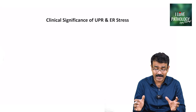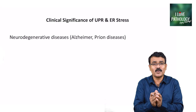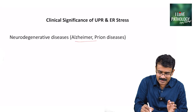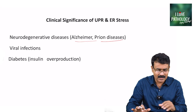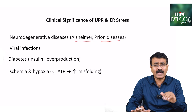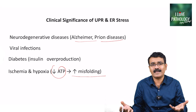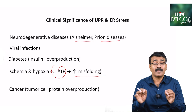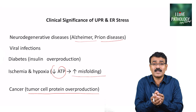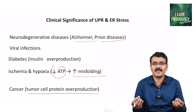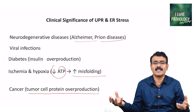We need to understand the unfolded protein response and ER stress because all the neurodegenerative diseases — Alzheimer's, prion diseases — are because of abnormalities in the unfolded protein response. Viral infections also trigger unfolded protein response. Even in diabetes with insulin overproduction, and in ischemia and hypoxia causing decreased ATP, misfolding increases and cells either survive or die by programmed cell death. Importantly, even in cancers, tumour cell protein overproduction creates a possibility of protein misfolding, and the unfolded protein response determines whether these cells survive or die.